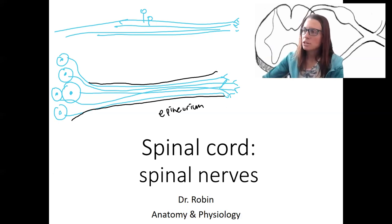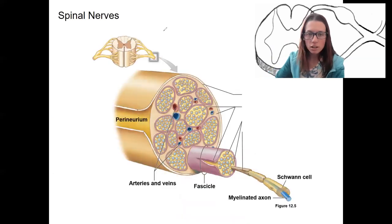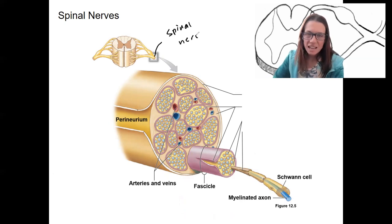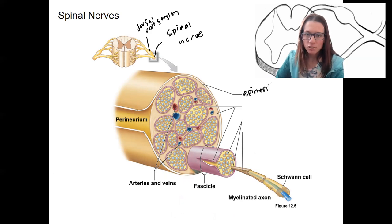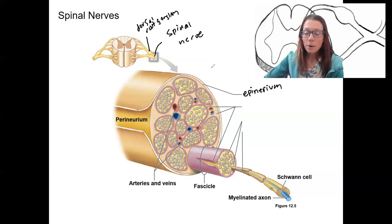Let's look at this in a picture that's better than what I can draw. Here is a cross-section of a spinal nerve. In this case, it happens to be taken right next to the dorsal root ganglion. This entire structure here is our spinal nerve, and this is our epineurium — the outer connective tissue layer.